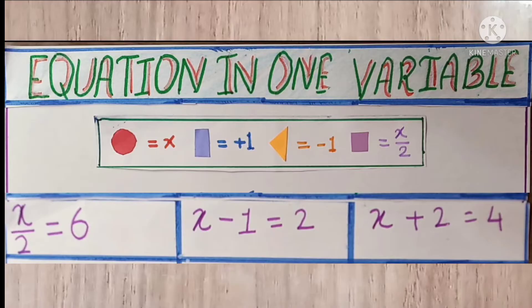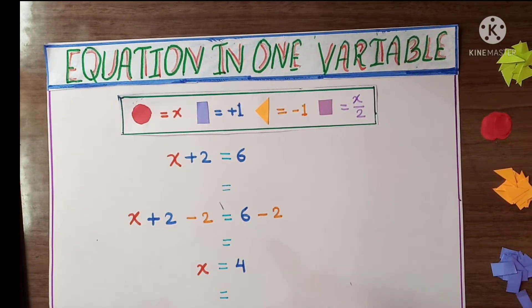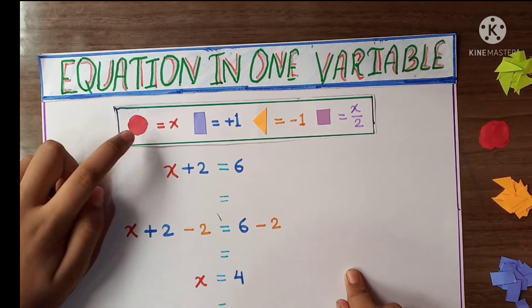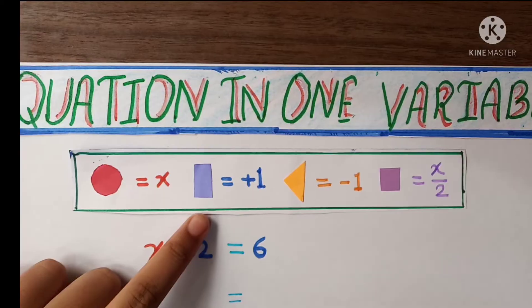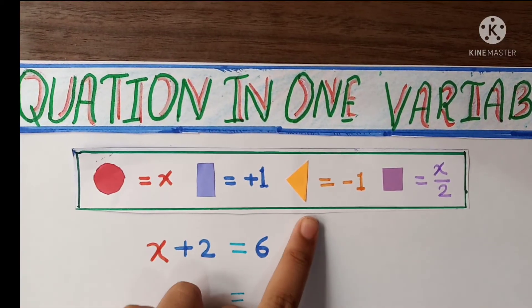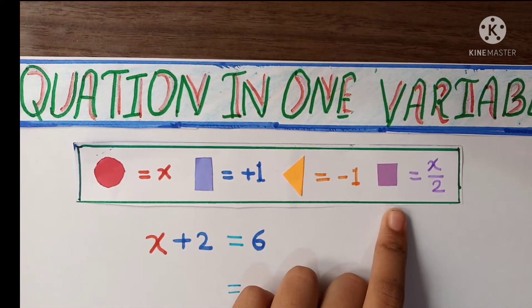So this is my activity and in this we are going to solve equation in one variable: 1st of plus, 2nd of minus, and 3rd of fraction. First we are going to see plus equation. So here circle is equal to x, rectangle is equal to plus 1, triangle is equal to minus 1, and this square is equal to x by 2.